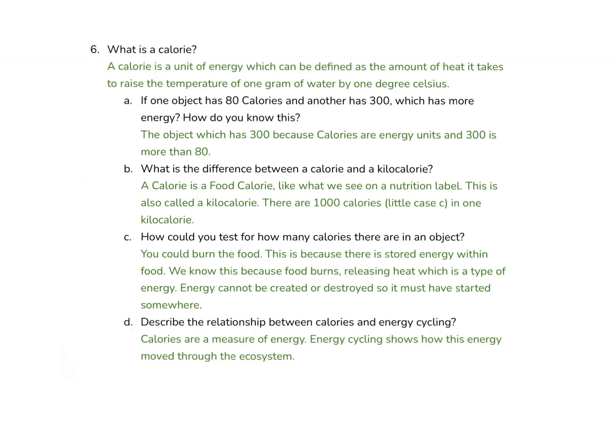Question number 6: what is a calorie? A calorie is a unit of energy which can be defined as the amount of heat it takes to raise the temperature of one gram of water by one degree Celsius. If one object has 80 calories and another has 300, the greater the number, the greater the amount of energy. So 300 is a bigger unit of energy than 80.